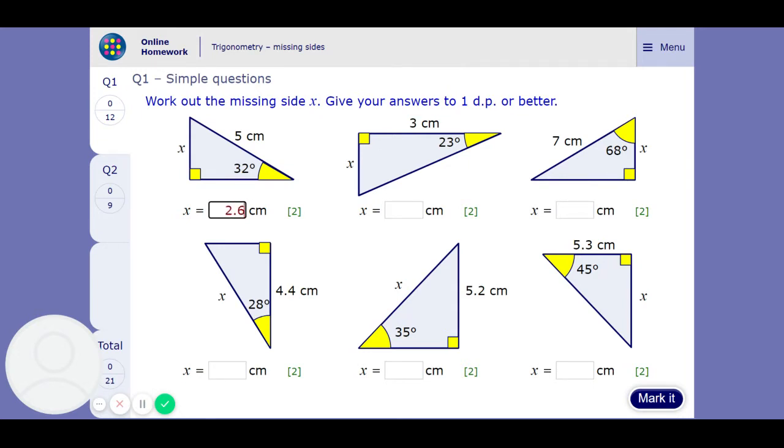So this one should be 2.6 if you answer to 1 decimal place or better. Let's just stick to 1 dp: 2.6. So this one and this one - opposite and adjacent - so that one is going to be tan. It's opposite over adjacent: 1.3.